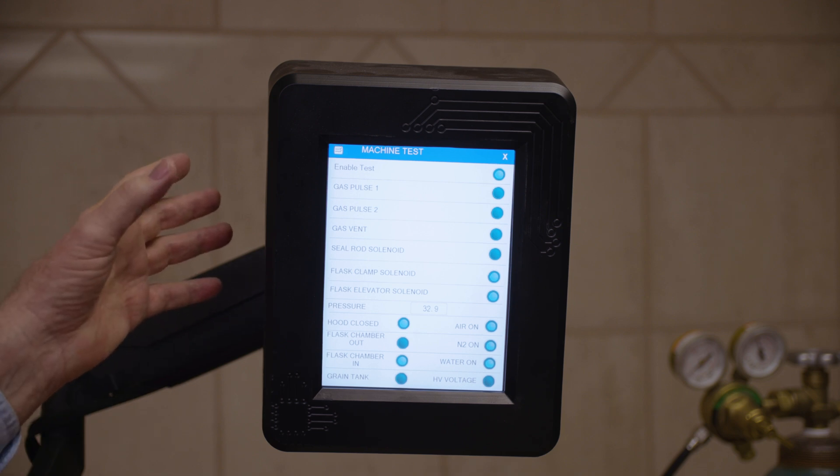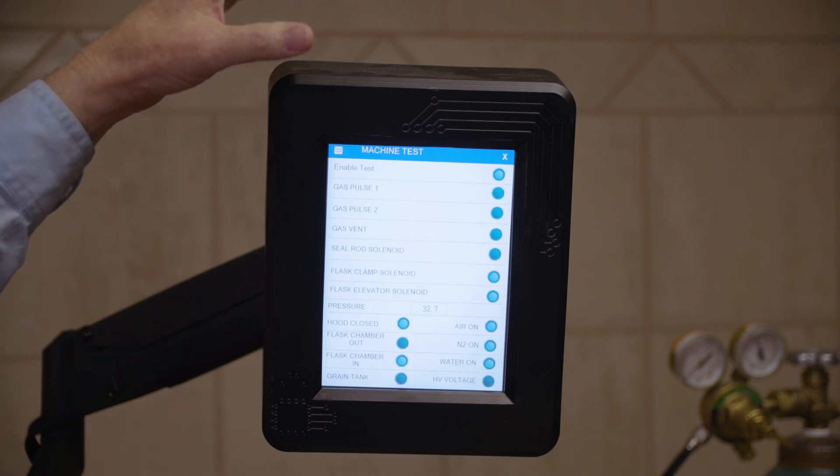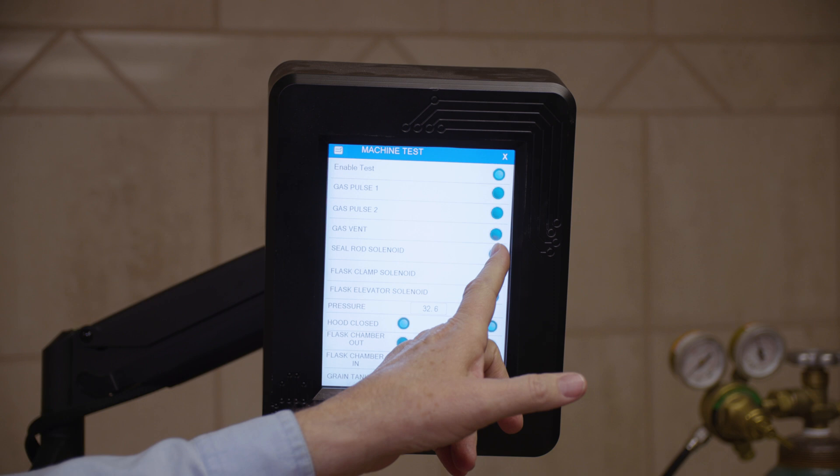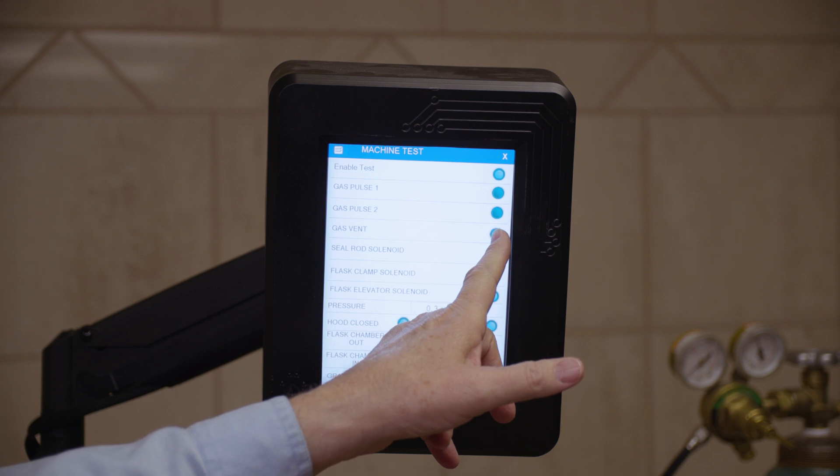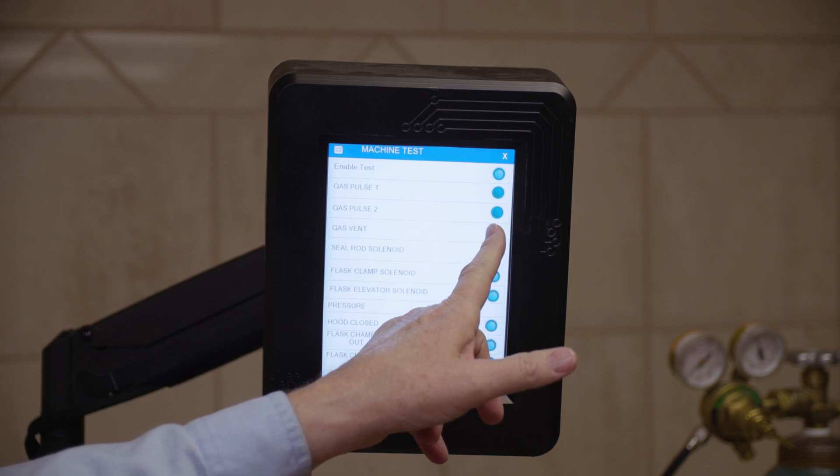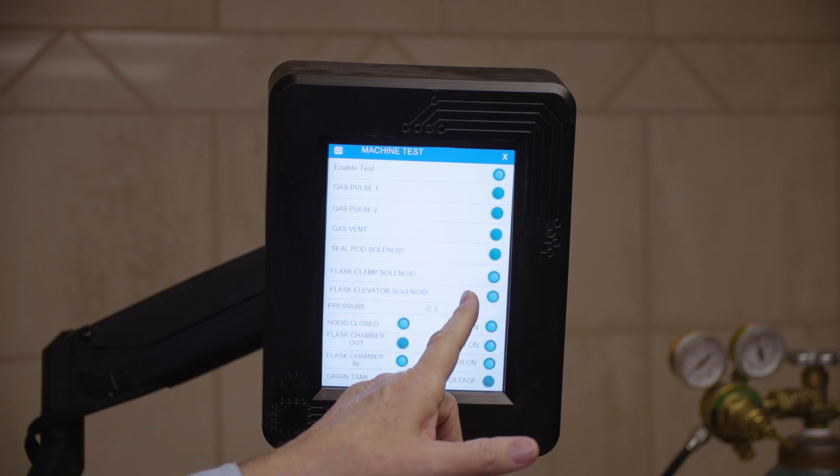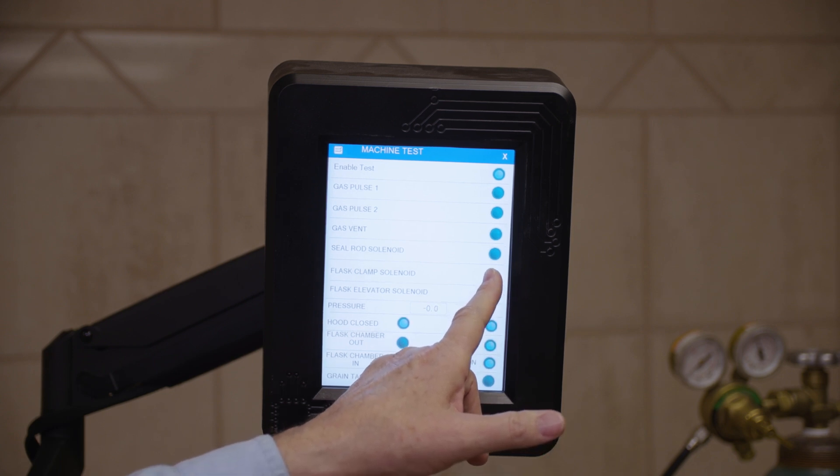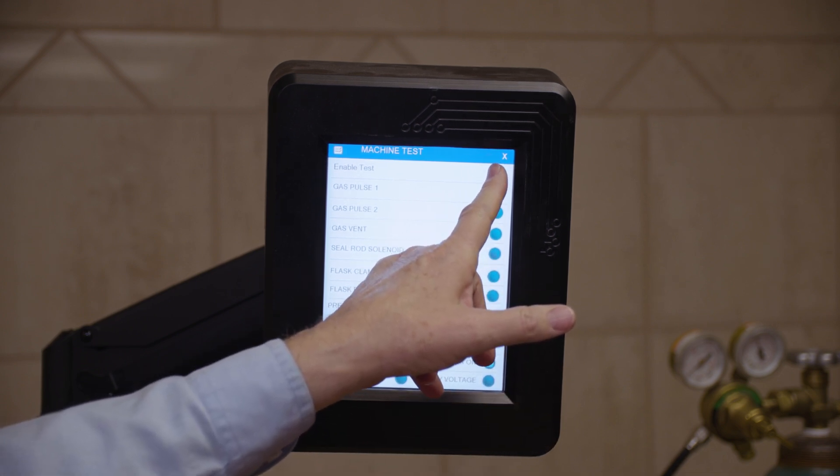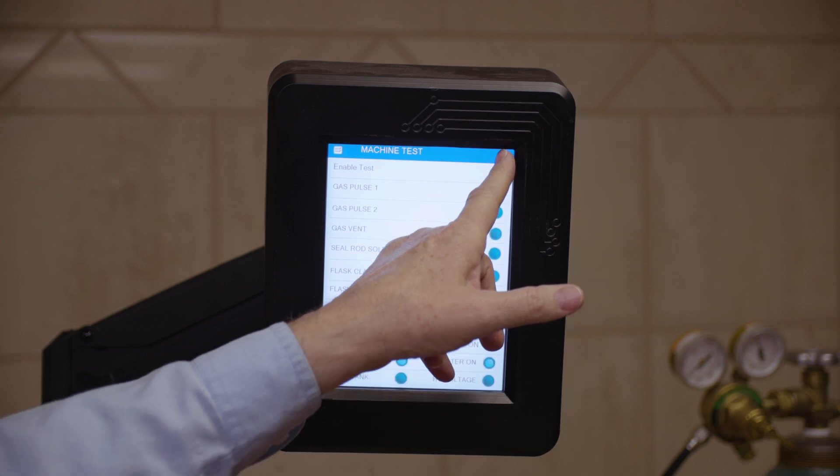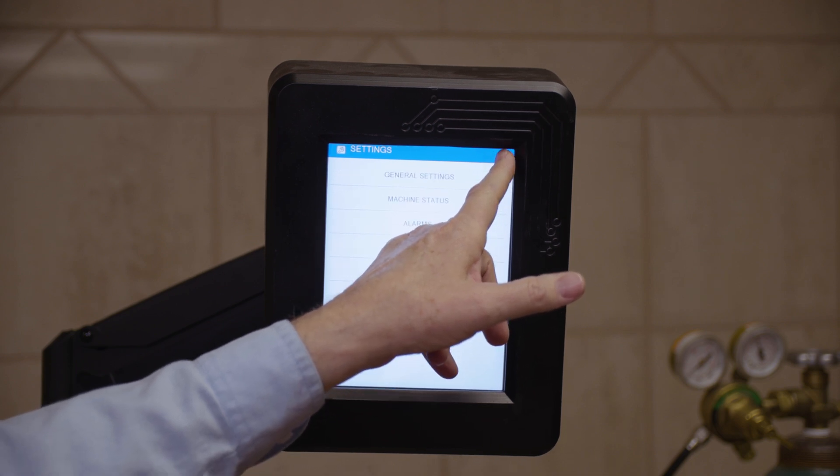So we're done with this screen. In order to get out of this, the first thing we do is release the vent. Then we're going to close the vent back up. Then we're going to lower the elevator, release the clamp, and disable the test, and then get out of this screen and go back to home.